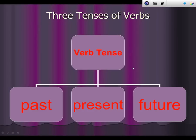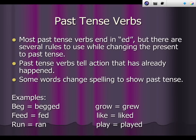There are three tenses of verbs: past tense, present tense, and the future tense. Most past tense verbs end in -ed, but there are several rules to use while changing the present tense to past tense. Past tense verbs tell action that has already happened.